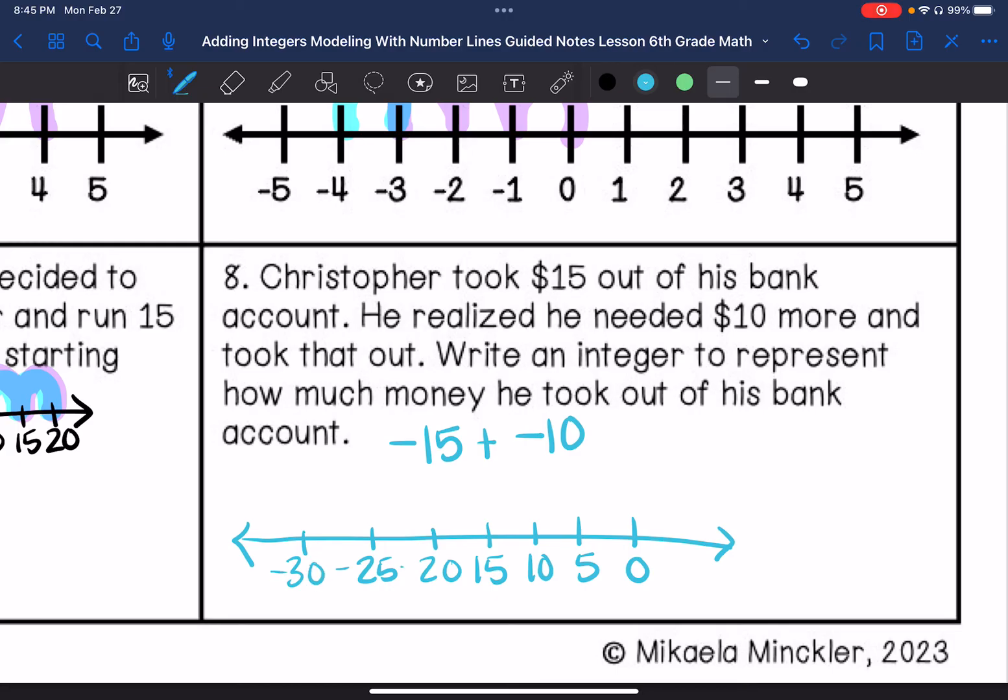So I'm going to draw my makeshift number line. These are negative numbers. I'm going to go to the left 15: 5, 10, 15. And then I'm going to go to the left 10: 5, 10. So then my integer is negative $25.